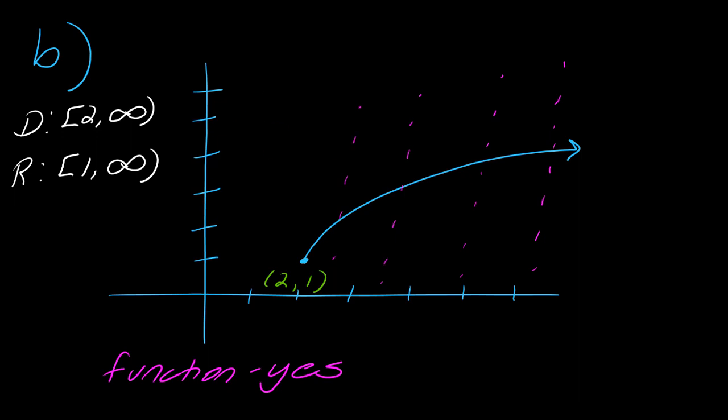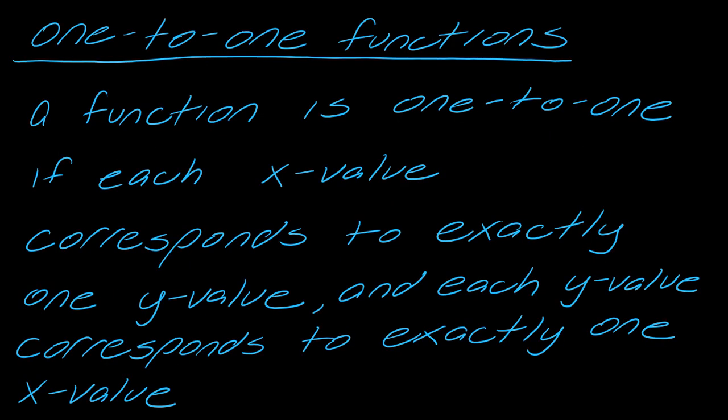So now let's talk about one-to-one functions. Okay, so one-to-one functions are a specific type of function. So a function is one-to-one if each x value corresponds to exactly one y value, and each y value corresponds to exactly one x value.